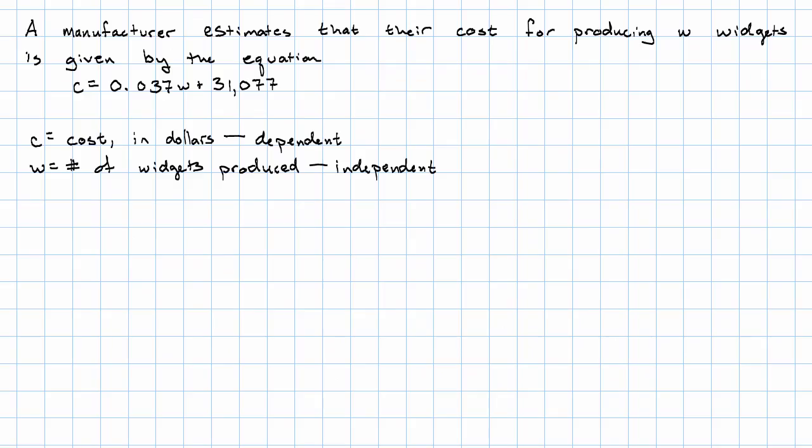Here's another example. Suppose a manufacturer estimates that their cost for producing w widgets is given by the equation c equals 0.037w plus 31,077, where c is the cost in dollars and w is the number of widgets produced.